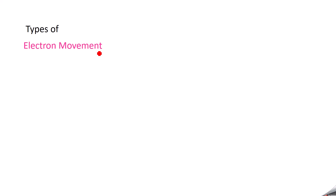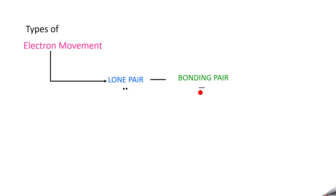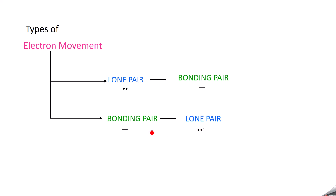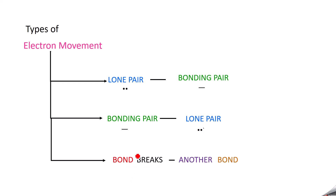There are three types of electron movement. The first one: a lone pair, indicated like this, is converted to a bonding pair. Second: a bonding pair becomes a lone pair. Third: a bond breaks and a new bond is formed — that means a bonding pair becomes another bonding pair. We will discuss each one by one.